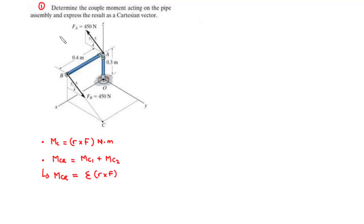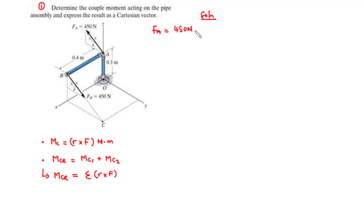Let's try our hands on question number one: Determine the couple moment acting on the pipe assembly and express the result as a Cartesian vector. For this question, we have a couple which has two forces, FA and FB. FA is equal to 450 Newtons and FB is also equal to 450 Newtons at A and B respectively.